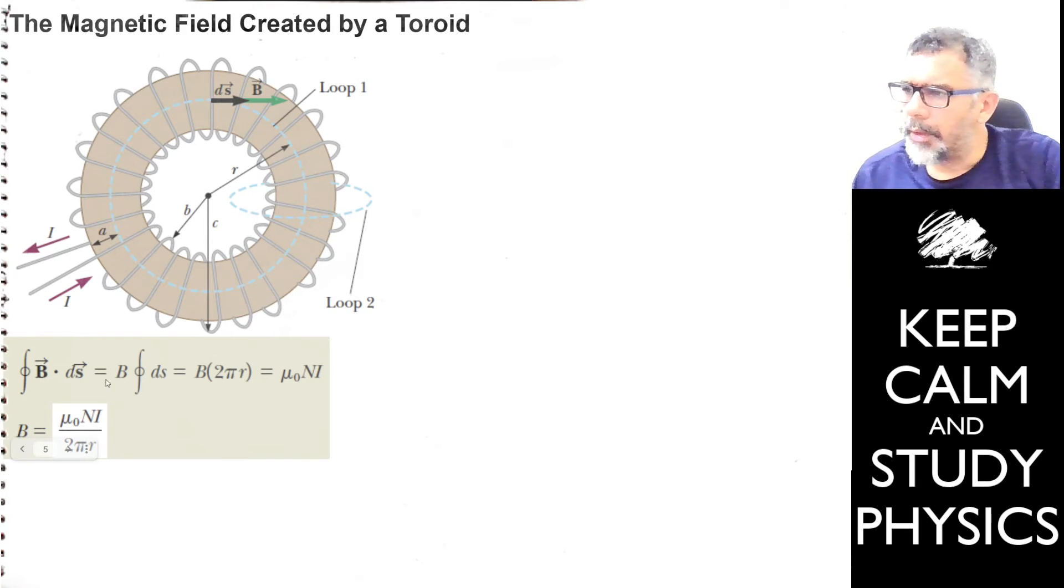So this B dot ds along this certain circle, the geometrical center central circle for the toroid. If you take this circle's radius to be small r, well, small r is going to be just the midway between this B radius and the C radius. B radius is just measured from the center, this distance to the wire winding, and C is this outside distance, and r is just midway between B and C, that's it.